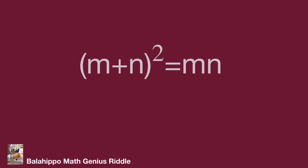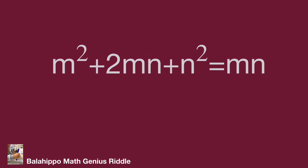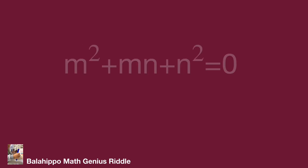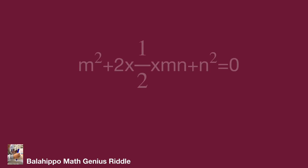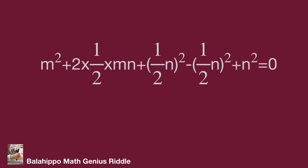It becomes: quantity (m + n) squared equals mn. Then develop the square and move items to the same side: m squared plus mn plus n squared equals 0. Now we have m squared and n squared, these two square items. I'm going to merge the mn term into one square item. So rewrite mn as 2 times (1/2) times mn. Put this item into the m squared group, then add quantity (1/2 n) squared into this group and then subtract (1/2 n) squared from the n squared group.